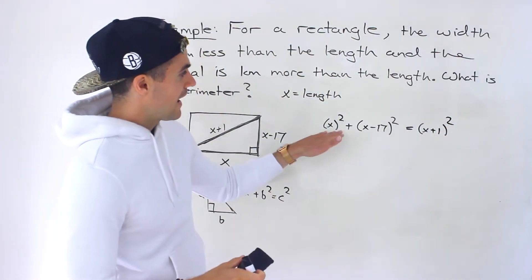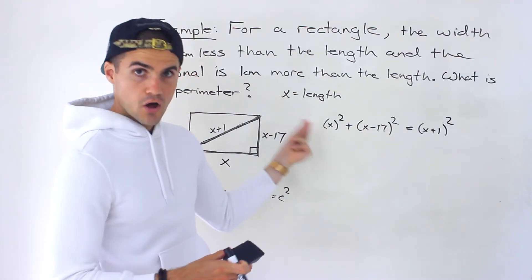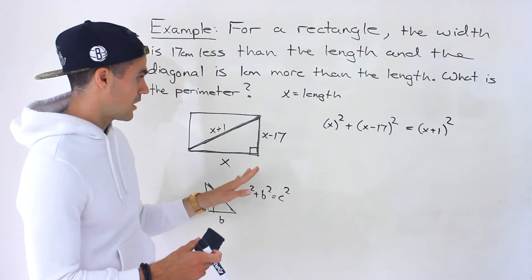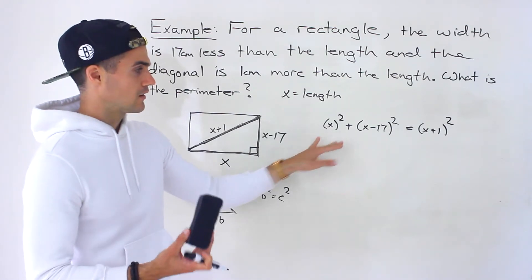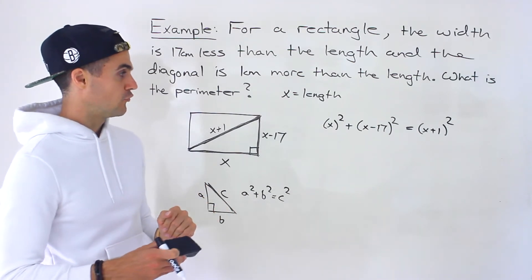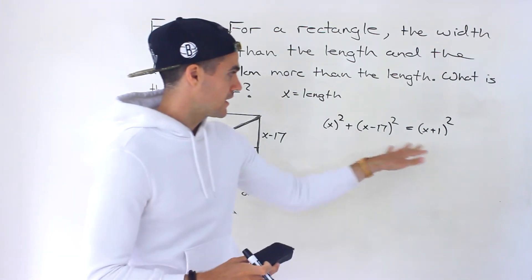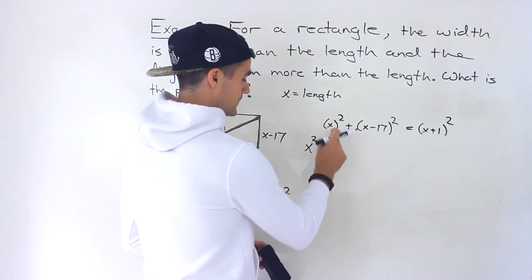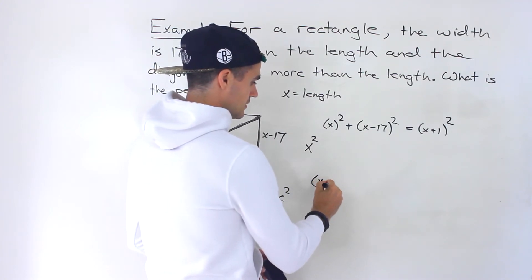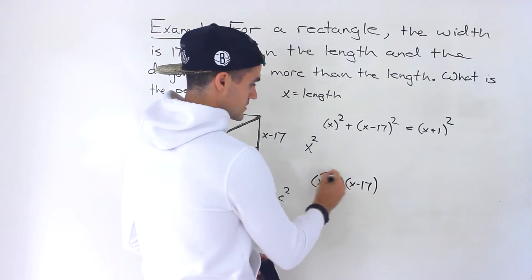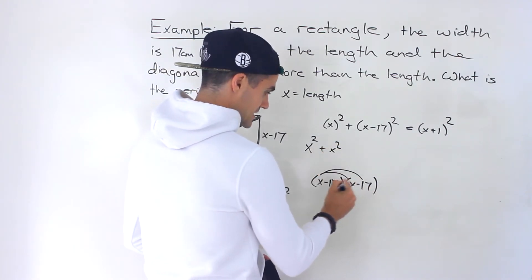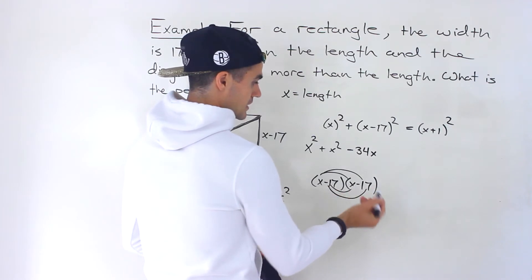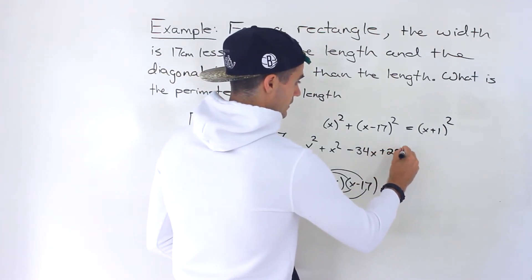Now we have an equation with a single variable x. Understanding the problem and setting up this equation is the toughest part — from here it's just algebra. We want to expand everything, bring it to one side, and solve. The x squared stays as is. Expanding (x minus 17) squared gives us x squared minus 34x plus 289.